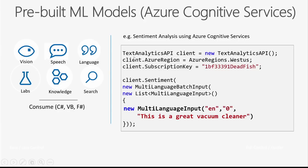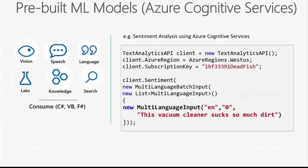Here we're using the Text Analytics API, part of Cognitive Services. We provide it a product review — in this case for a vacuum cleaner: 'this is a great vacuum cleaner' — and the API returns a sentiment indicating whether the review is positive. This is very simple, backed by a pre-trained ML model. For many scenarios this works well. However, if we change the review to 'this vacuum cleaner sucks so much dirt,' the sentiment comes back as only 9% positive — actually negative — even though it's clearly a positive vacuum cleaner review. This highlights the limitations of pre-trained ML.